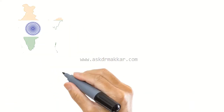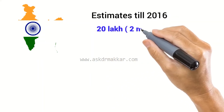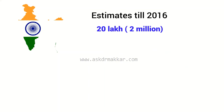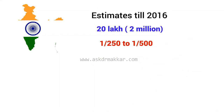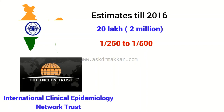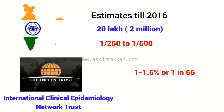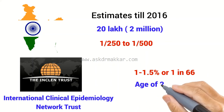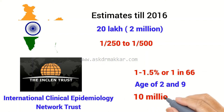India: estimates till 2016 estimated that there are 20 lakh (2 million) individuals in India suffering from autism or ASD, using extrapolated prevalence figures of 1 in 250 to 1 in 500. However, recent studies by the International Clinical Epidemiology Network Trust suspect a prevalence rate of 1 to 1.5%, or 1 in 66 children between the age of 2 and 9, taking the affected children count to close to 10 million (1 crore).